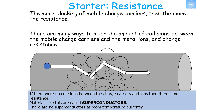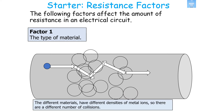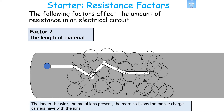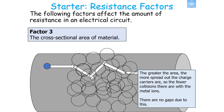Materials with no resistance are called superconductors, and there are currently no superconductors at room temperature. The following factors affect the amount of resistance in an electrical circuit: the type of material, because different materials have different densities of metal ions and therefore a different number of collisions; the length of the material — the longer the wire, the more metal ions present and the more collisions; and the cross-sectional area — the greater the area, the more spread out the charge carriers and the fewer collisions with the metal ions.